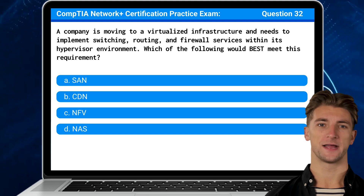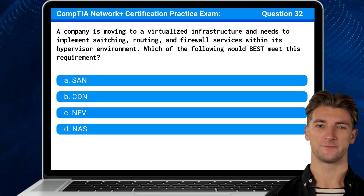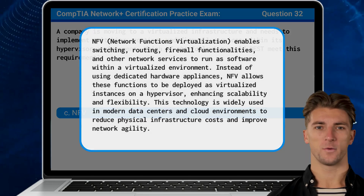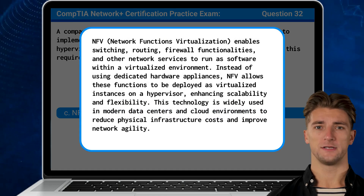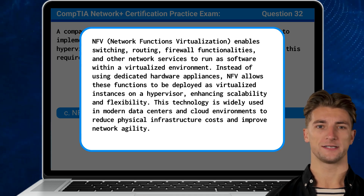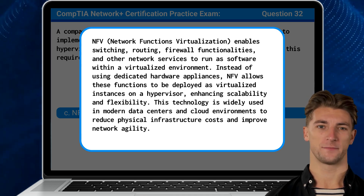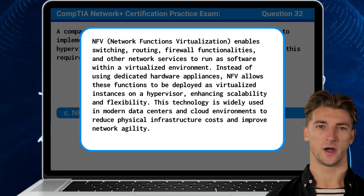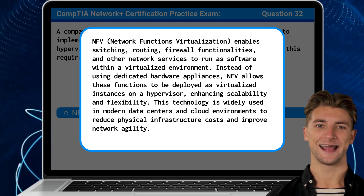The answer is C: NFV. Network Functions Virtualization enables switching, routing, firewall functionalities, and other network services to run as software within a virtualized environment. Instead of using dedicated hardware appliances, NFV allows these functions to be deployed as virtualized instances on a hypervisor.